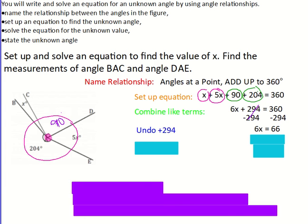From here, the inverse operation of multiplying by 6 is dividing by 6. So we're going to divide both sides by 6. The 6s cancel on the left. And on the right-hand side, 66 divided by 6 is 11. So x is equal to 11.